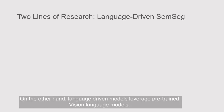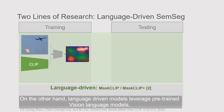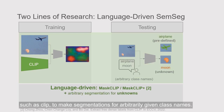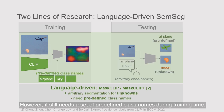On the other hand, language-driven models leverage pre-trained vision-language models, such as CLIP, to make segmentations for arbitrarily given class names. However, they still need a set of predefined class names during training time.